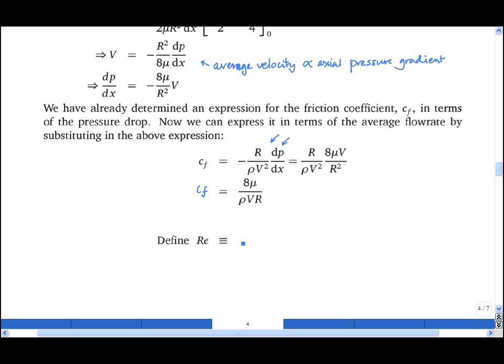Now we define a non-dimensional number. I'll call it the Reynolds number and define it as rho vd divided by mu. And if I substitute this expression into cf, I find that cf is equal to 16 divided by Re.